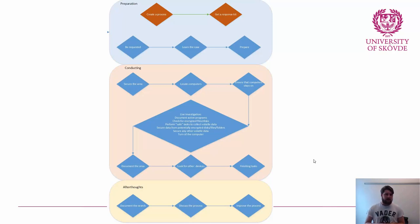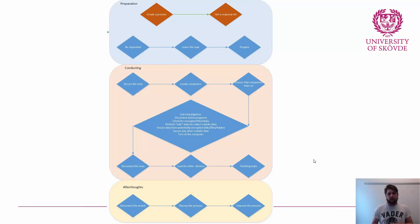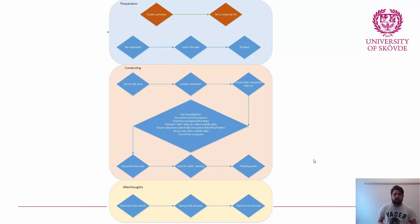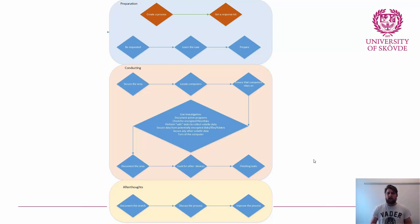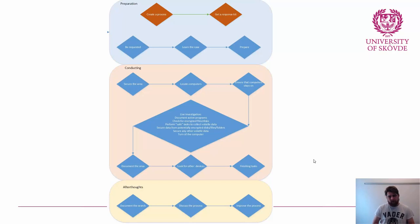After the live investigation, document how things were connected and where they were positioned. This is considered part of a sound house search. If you're in court and someone asks how a computer looked, you want to say 'I have a photograph on page 3 — it was black.' If you say 'I have no idea, I was in a rush,' the defense will ask 'What else did you miss?' — and that's very bad. So document the area thoroughly.